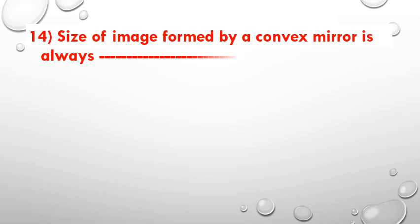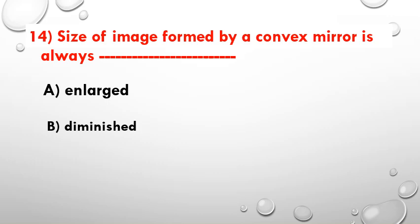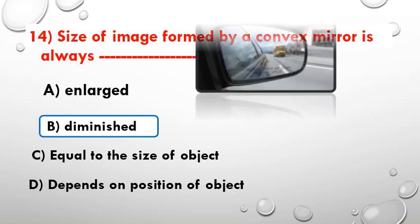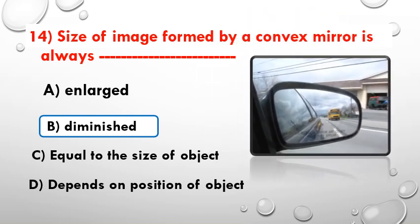The size of the image formed by a convex mirror is always — option A: enlarged, option B: diminished, option C: equal to the size of the object, option D: depends upon the position of the object. The answer is always diminished. Observe the picture — here we are using a convex mirror and the image is very diminished.